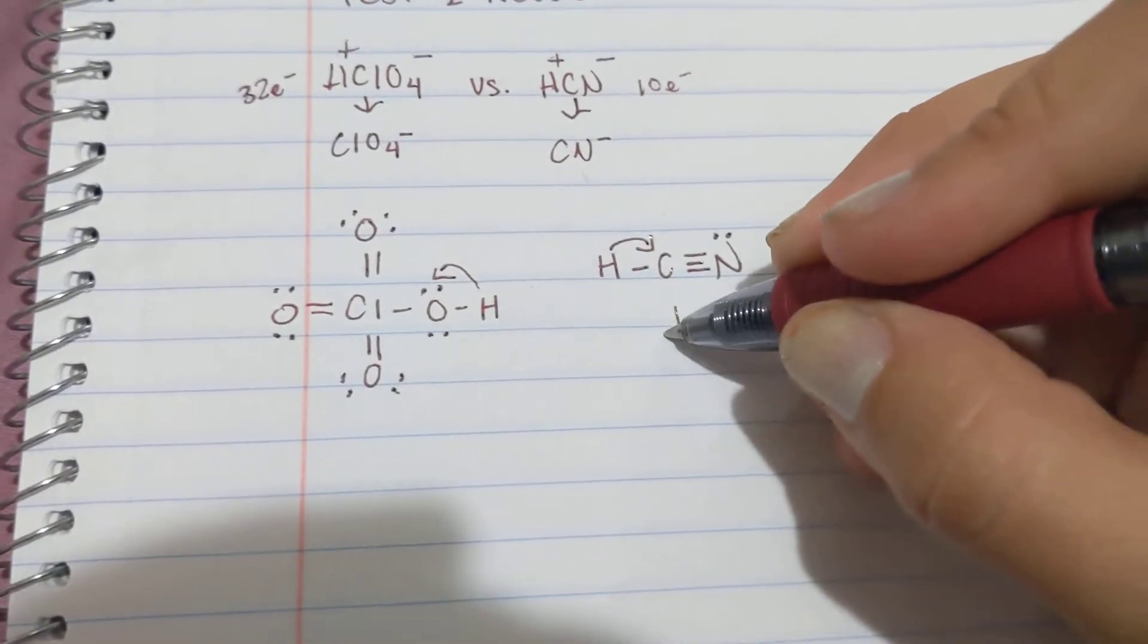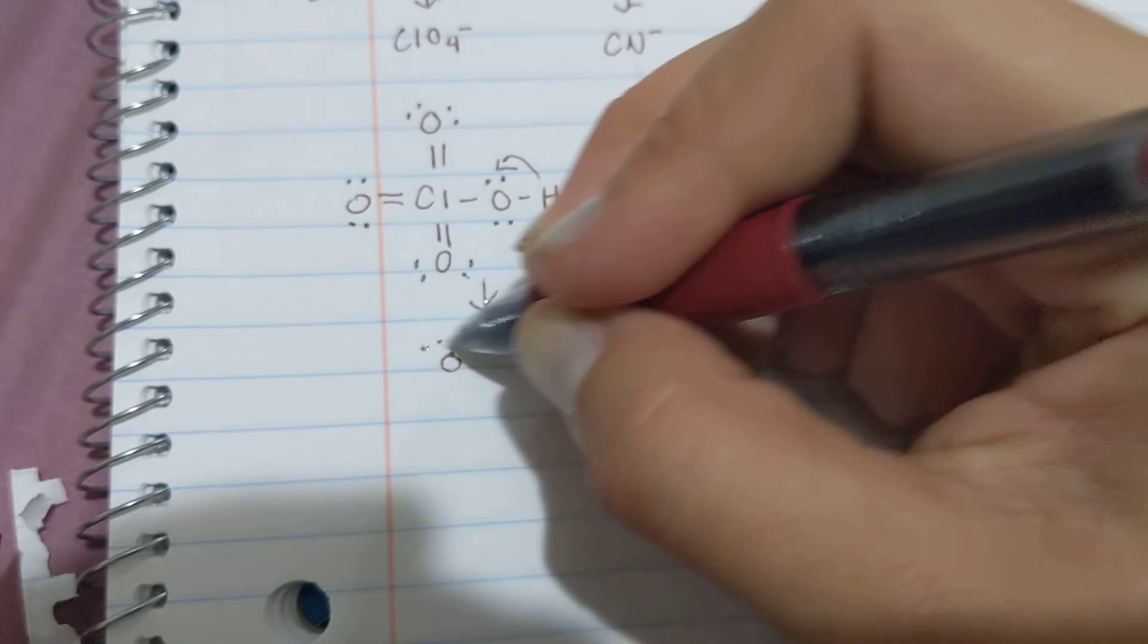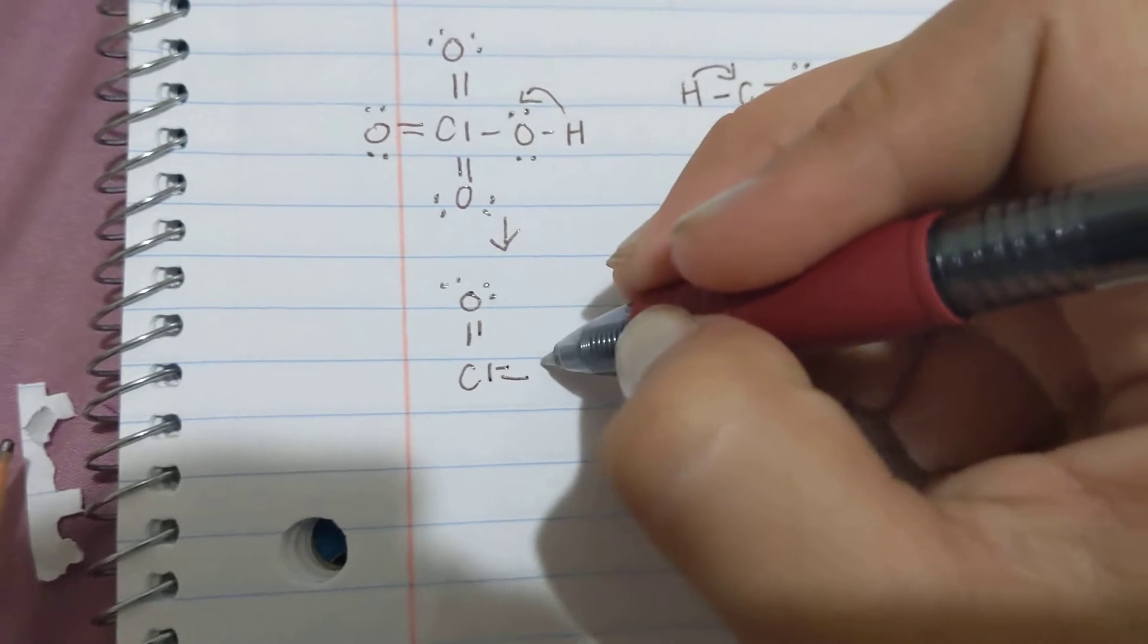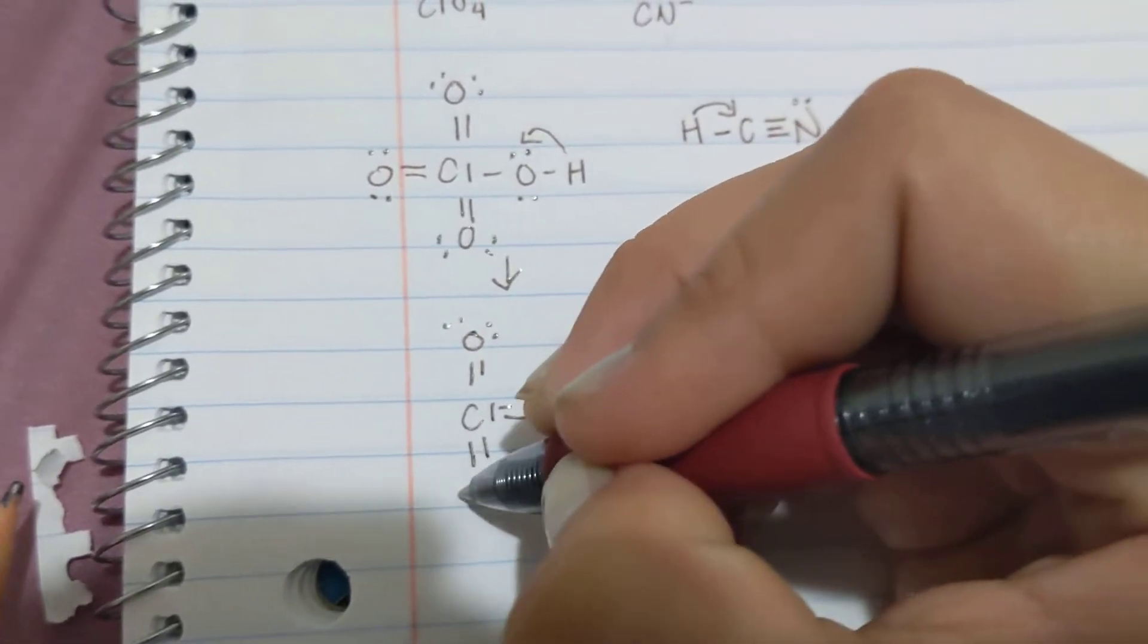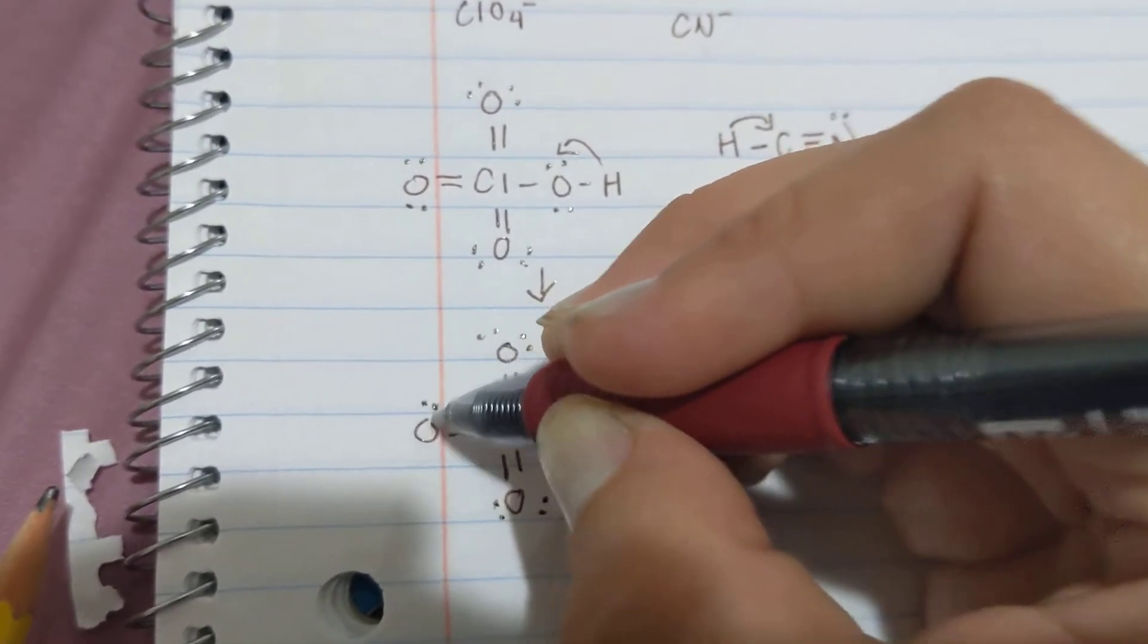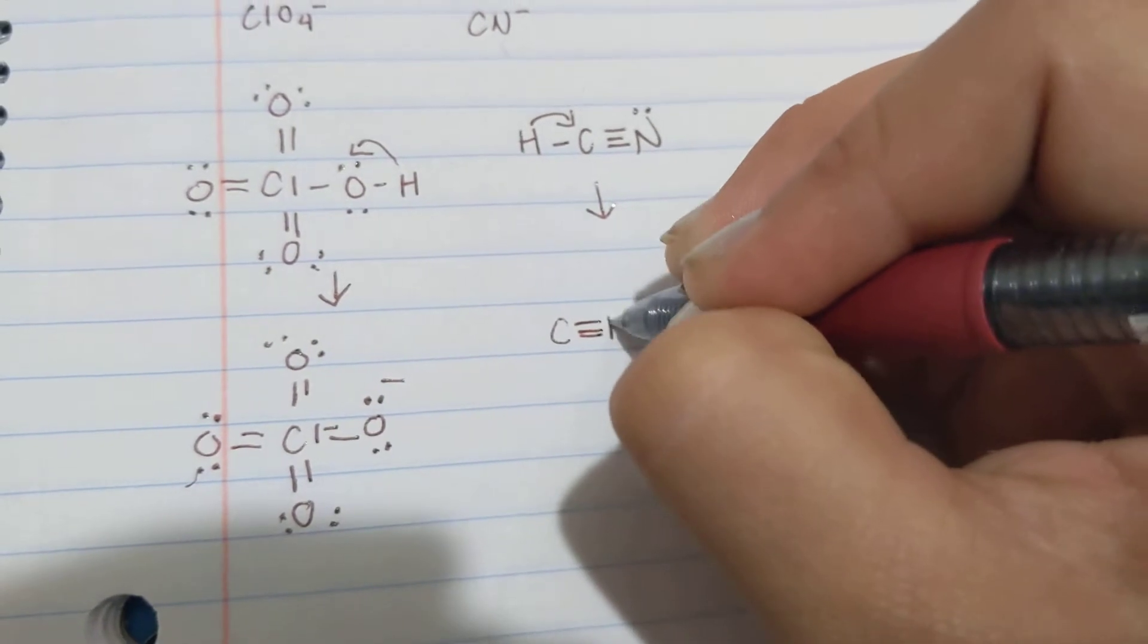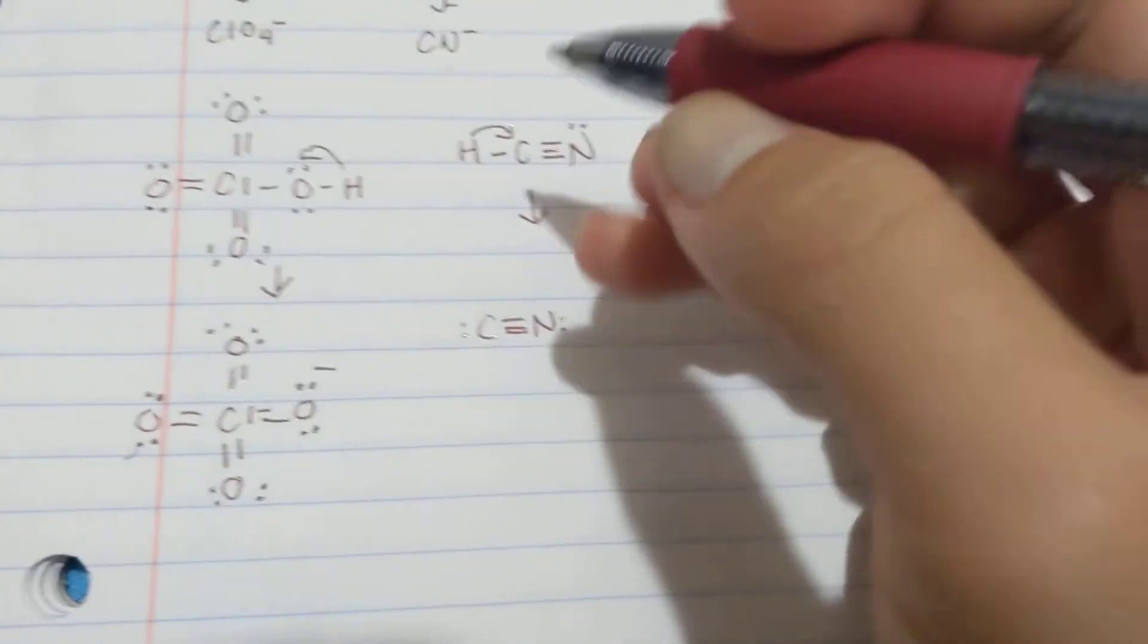Now we get our conjugate Lewis structures. This is a nice tedious process. I have zero editing skills, I'm not going to speed this up in any way. We're just going to very tediously write out all of this. We give our guy here a minus, and the conjugate base here is CN minus is on this side.